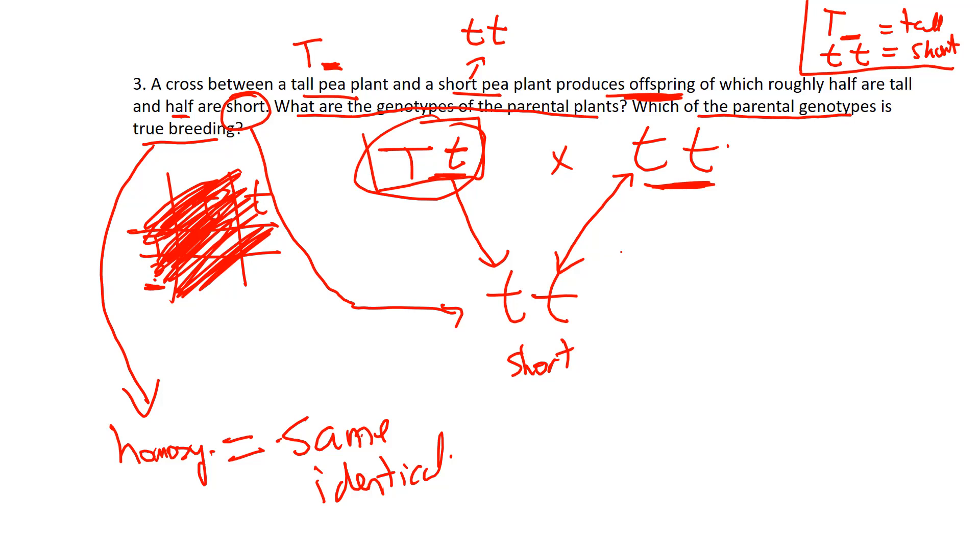Well, this one is hetero, so that can't be it. This one has two alleles that are exactly the same, so our parental genotype that is true breeding would be this one right here. This is a true breeding parent because both their alleles are identical. Okay, thanks guys! Any questions, just give me an email and we can go over this. Thank you.